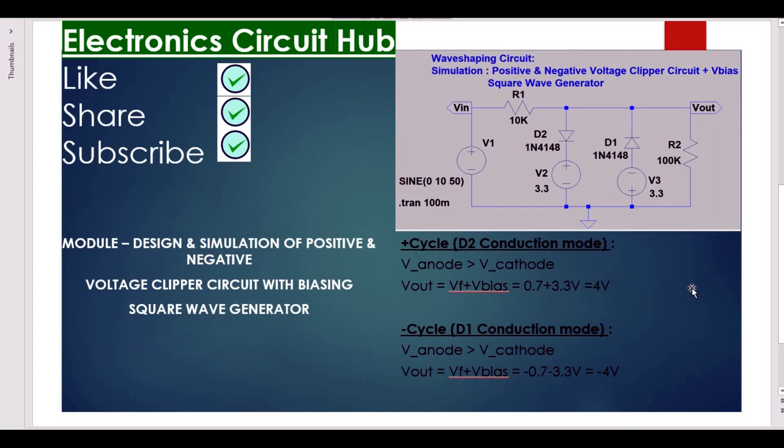We will also see how to generate a square wave with a sinusoidal input. Let's come back to this circuit. This circuit we have already seen - this is a positive voltage clipper.